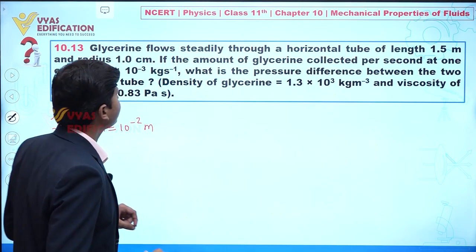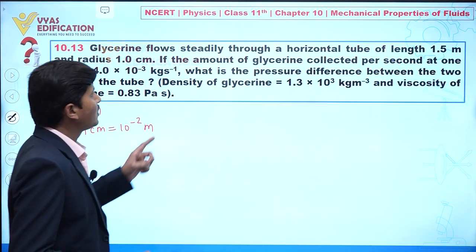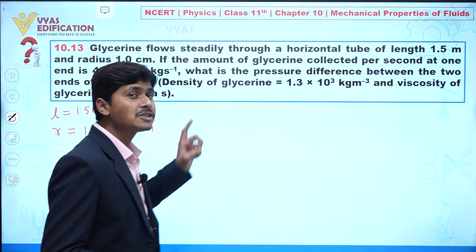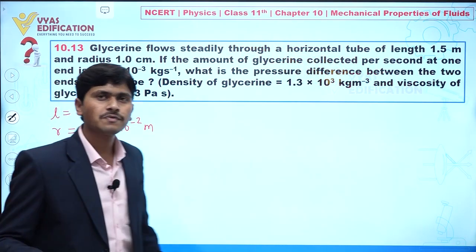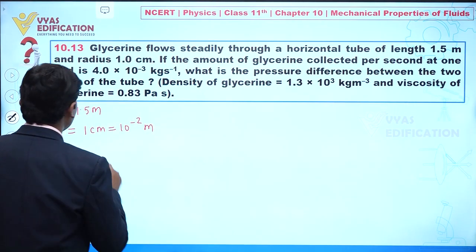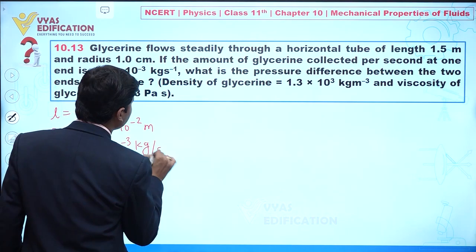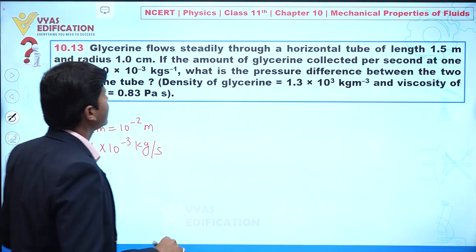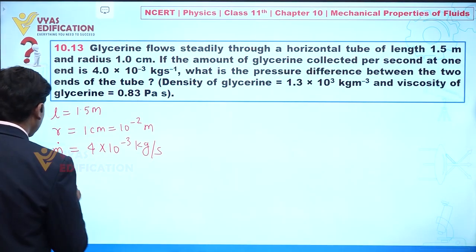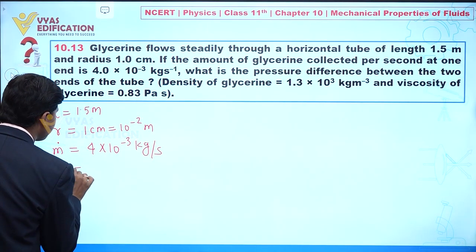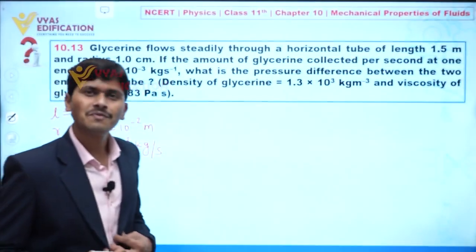It is also given in this question that the amount of glycerin collected per second at one end is the mass flow rate. I can write this as ṁ, indicating mass flowing per unit time. This value is 4 into 10 to the power minus 3 kilogram per second. Our objective is to calculate the pressure difference between the two ends of the tube. First, can we calculate the volume flow rate?